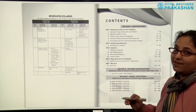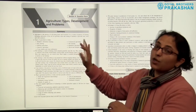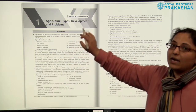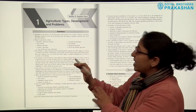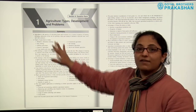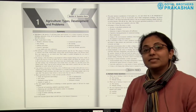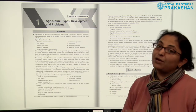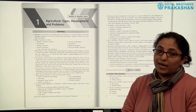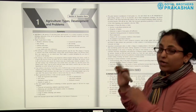Now this is Section A — the question bank. The first unit is Agriculture: Types, Development and Problems. We have the summary at the beginning. All the summary points are given in bullet points, not in paragraph form. The reason is that the child can recapitulate and revise the complete chapter's important points in a very short while and effectively. That is why all the important points are given point-wise at the start.